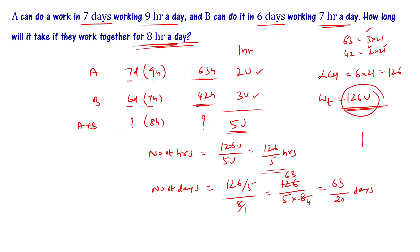Simplifying 63 by 20: 63 divided by 20 gives 3 remainder 3, so the answer is 3 and 3/20 days, or 63/20 days.